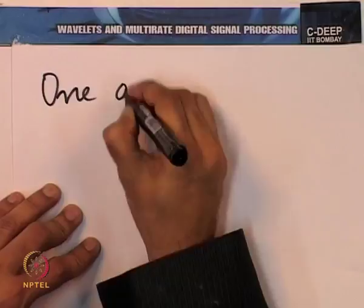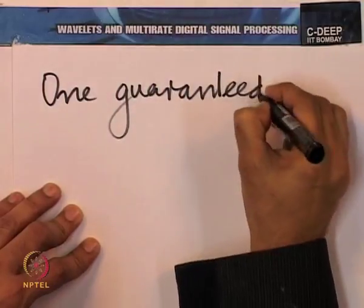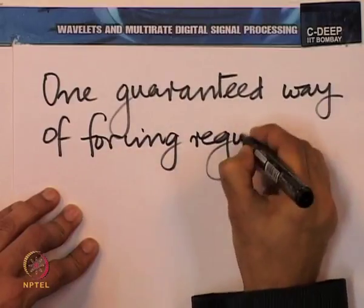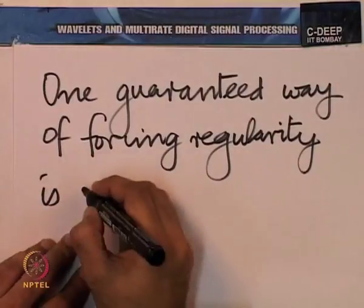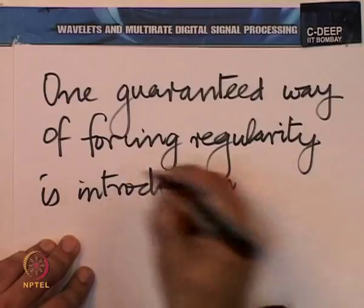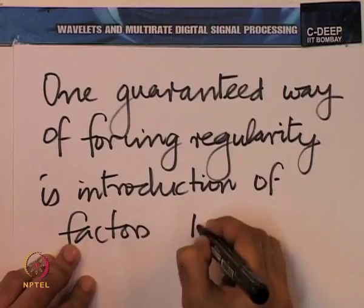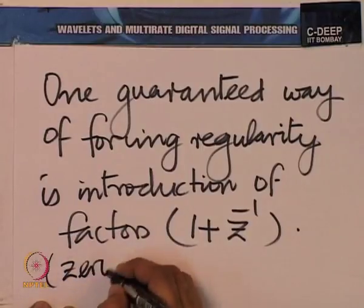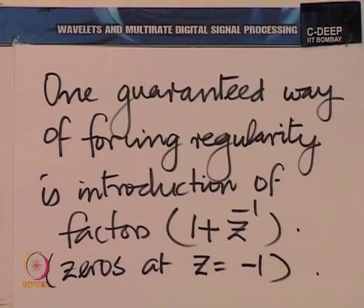One guaranteed way of forcing regularity is the introduction of factors — specifically zeros at z = -1 in the low pass filter. The more zeros you have at z = -1 in the low pass filter, correspondingly you would have zeros at z = +1 in the high pass filter. When you put z = -1, you are talking about e^(jω) = e^(j*π), so omega equals π — the extreme high frequency.